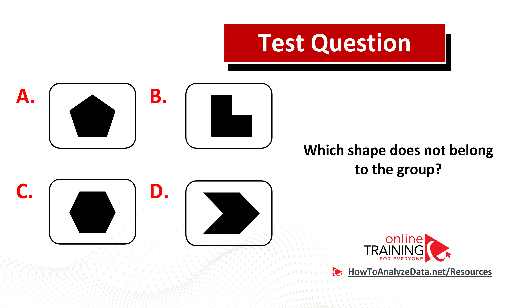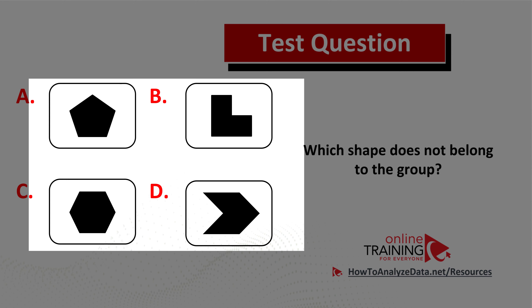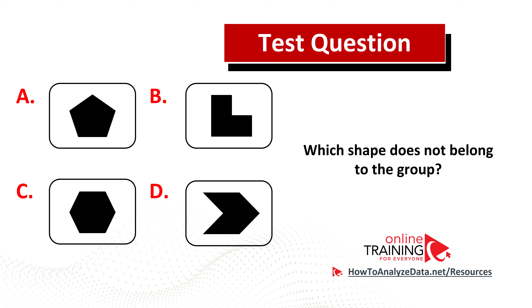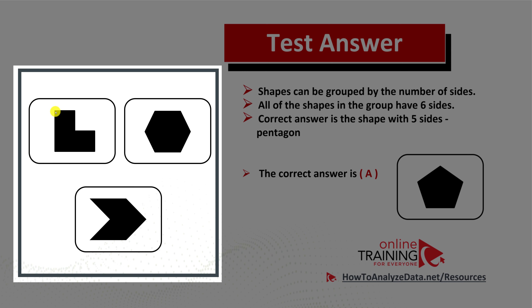This question is quite tricky, but let's solve it together. Which shape does not belong to the group? You have four choices of shapes. Shapes can be grouped by the number of sides. All the shapes on the left have six sides — you can count: one, two, three, four, five, six for each. The same is true for the hexagon and the arrow shape, each with six sides.